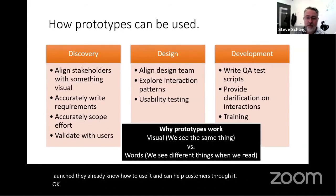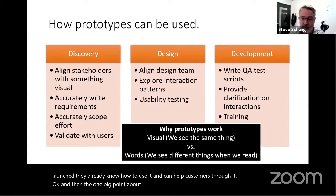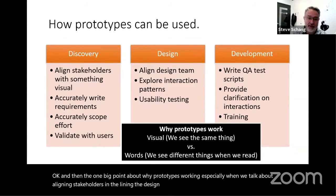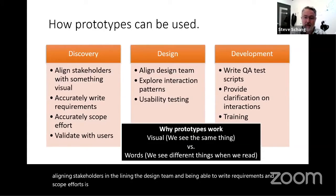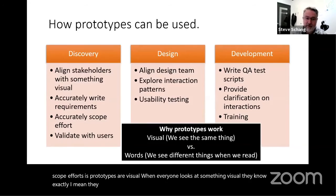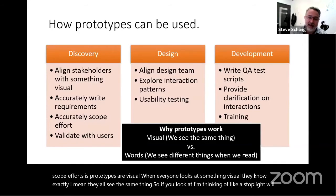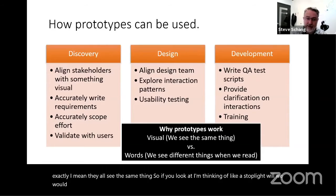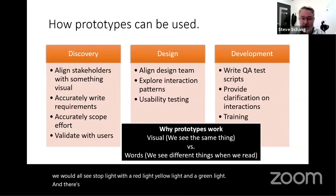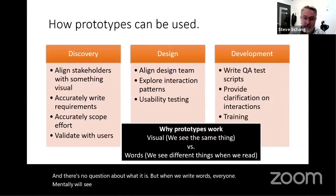The big point about why prototypes work — especially for aligning stakeholders, writing requirements, and scoping efforts — is that prototypes are visual. When everyone looks at something visual, they all see the same thing. Think of a stoplight: we'd all see a red light, yellow light, and green light — no question about what it is. But when we write words, everyone mentally sees something different in their head.